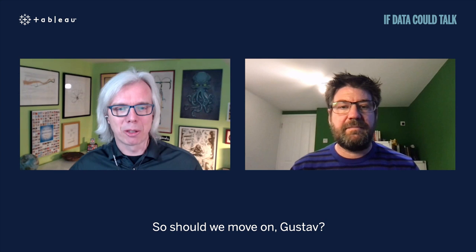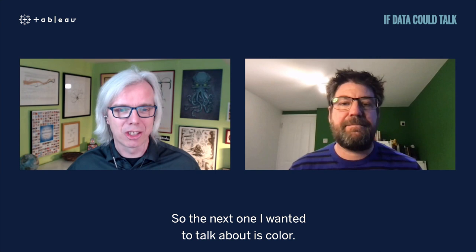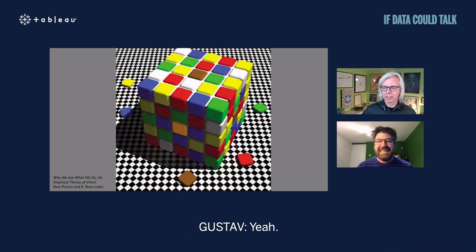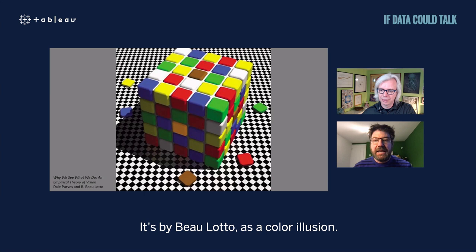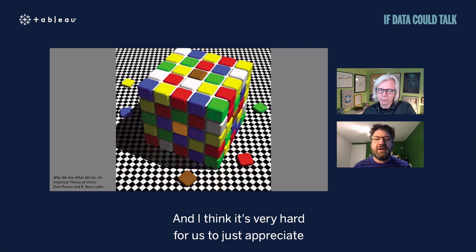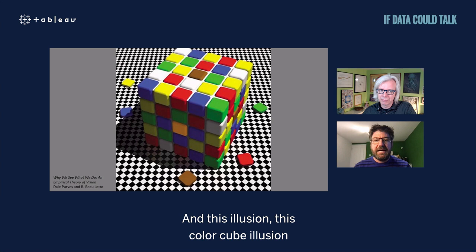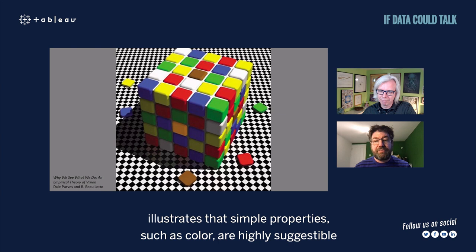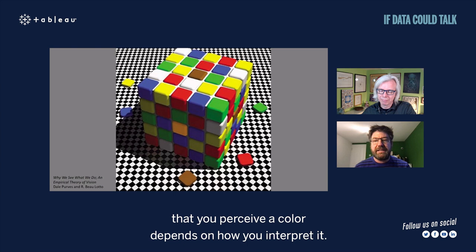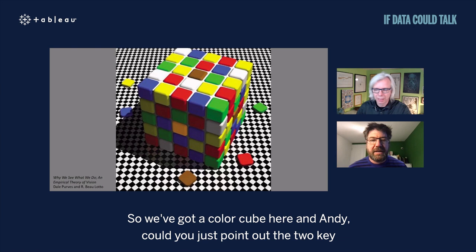Next, let's talk about color. This is huge in data visualization. This is the Adelson color cube illusion — perception is really about inference, and this illustrates just how subjective it is. We have two squares on this color cube. One looks brown to me. The other looks orange. Would you agree?